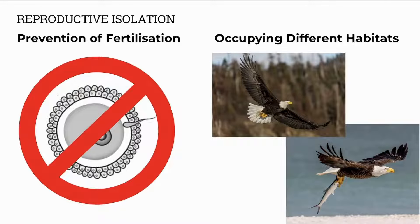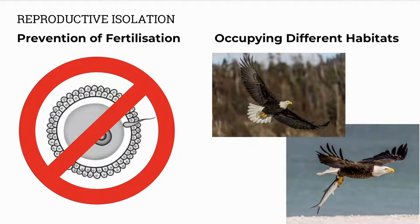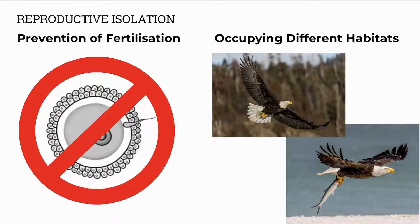Other animals can prevent fertilization — whether their reproductive organs are not compatible or the gametes just can't fuse for some other reason. Another way that species can remain separate is by occupying different habitats or niches. For example, the bald eagle and the fish eagle live in the same area but occupy different niches or have different roles, so they don't meet, they don't mate, they become separate.